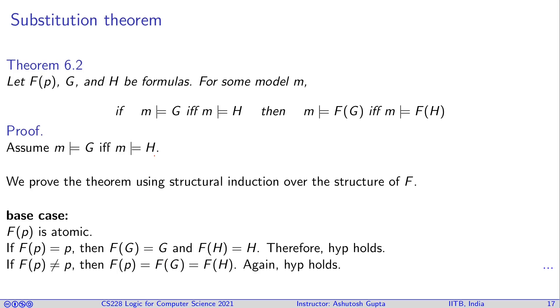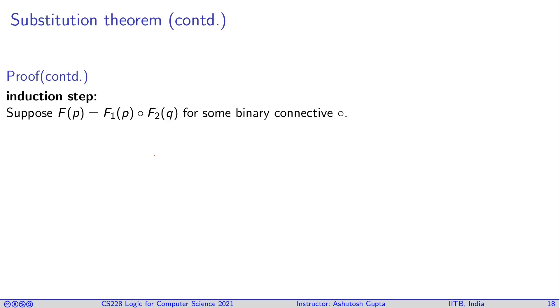Let's suppose the base case is not a variable, then it must be a constant: true or false. In those cases, F doesn't change. So F(p) equals F(G) and equals F(H). Either both are true or both are false, so that doesn't change anything.